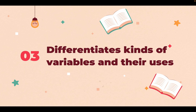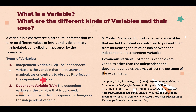Next, number three: variables. What are variables? A variable is a characteristic, attribute, or factor that can take on different values or levels, and is deliberately manipulated, controlled, or measured by the researcher.